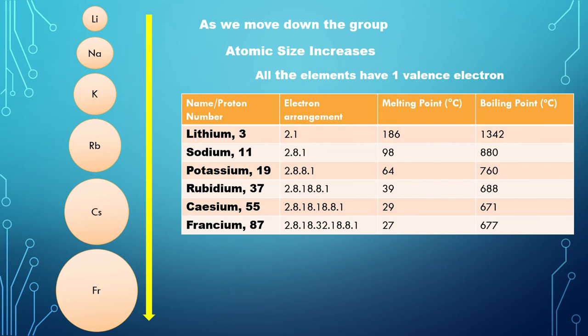One point to be noted again is that each of these first group elements have one valence electron and these can be seen in their electron arrangement as we move down this table column.